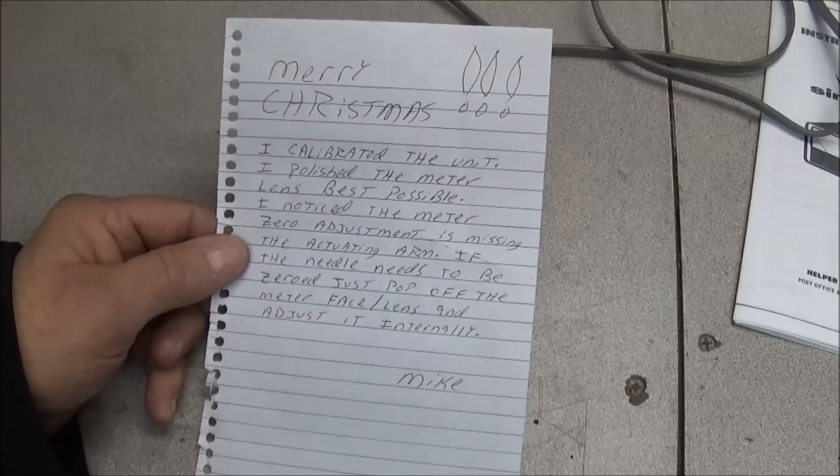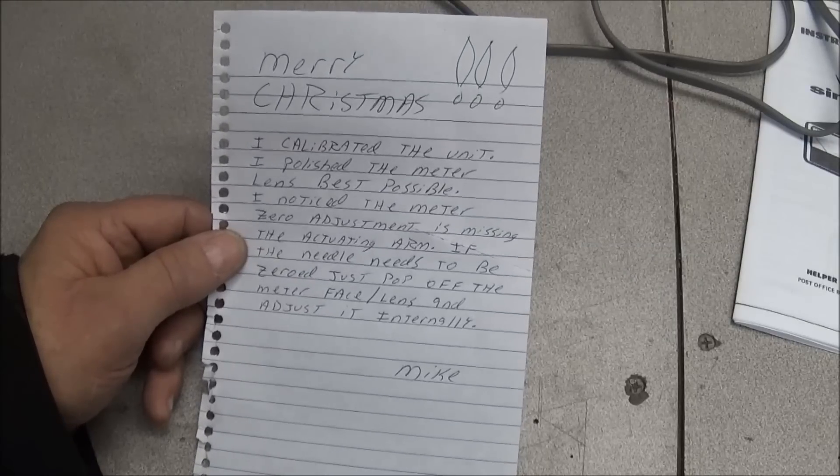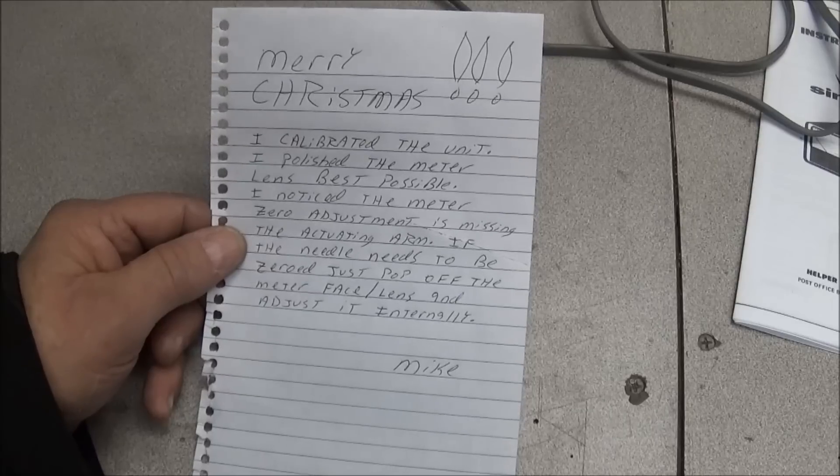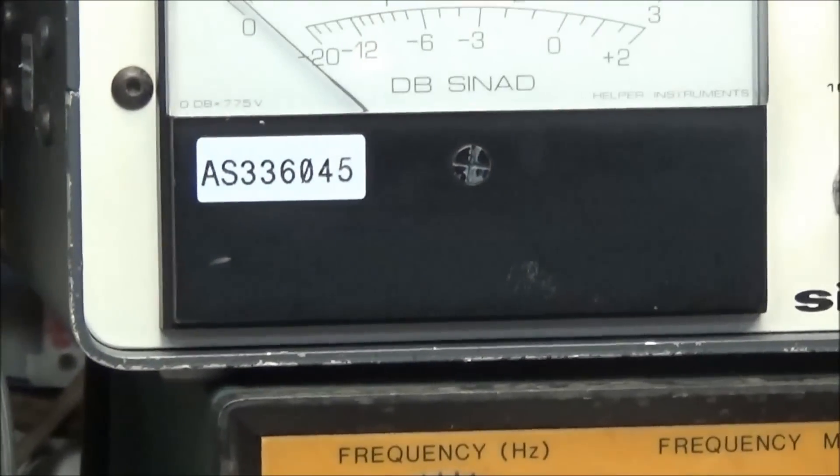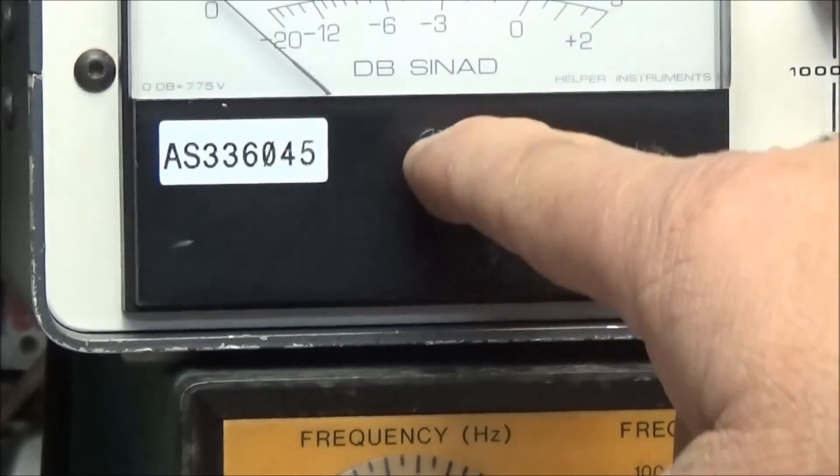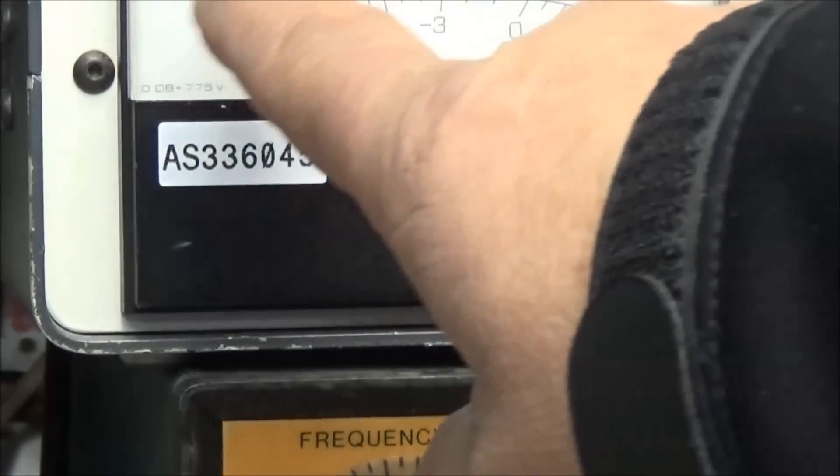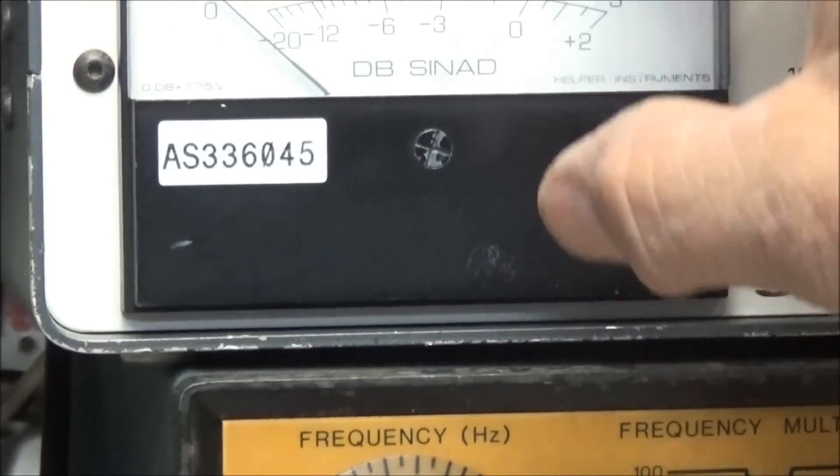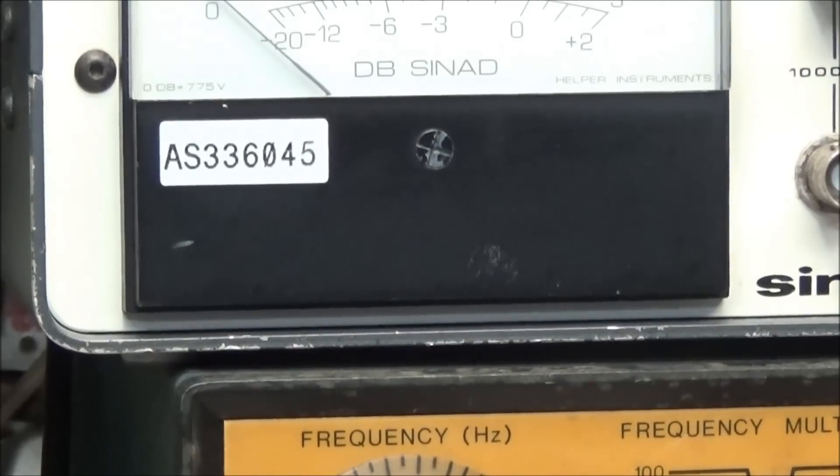This old note says Merry Christmas. I calibrated the unit, I polished the meter lens the best possible. I noticed that the meter zero adjustment is missing or the activating arm. If the needle needs to be zeroed, just pop off the meter face lens and adjust it internally. And what it is, on the back, you see I've already got me a home for it right there. On the meter is a little screw that you can turn, and on the back of that screw is a little arm that sticks off to one side, so there's a little fork on the meter calibration. By turning this, it just moves it back slightly to zero the meter. So since that one's broken, you can turn it and it won't do anything. So all you have to do is just pop the lens off and move the little fork back and forth manually. No big problem, be very easy to do.